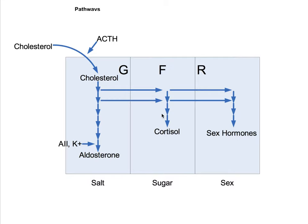The final step triggering aldosterone release is angiotensin 2 and potassium. Cortisol is key for the entire pathway. If cortisol is too high, ACTH will decrease. If cortisol is too low and insufficient, ACTH will increase.